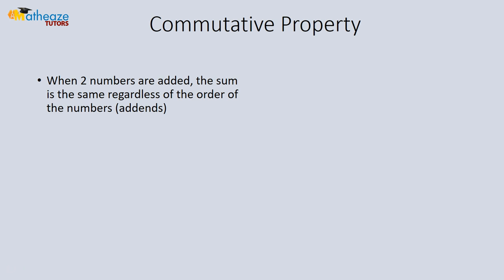The commutative property simply states that when two numbers are added, the sum is the same regardless of the order of the numbers. For example, 3 plus 4 is the same as 4 plus 3 — both equal 7. Similarly, 18 plus 2 is the same as 2 plus 18.